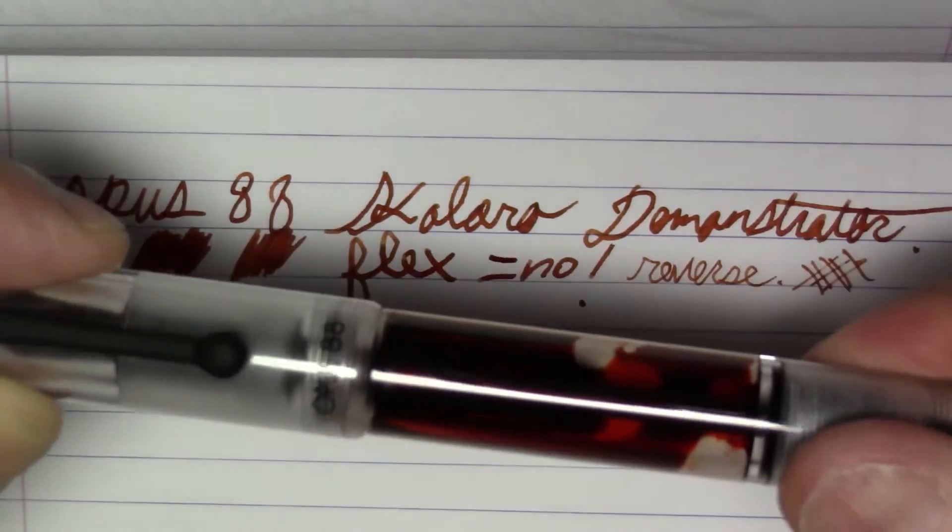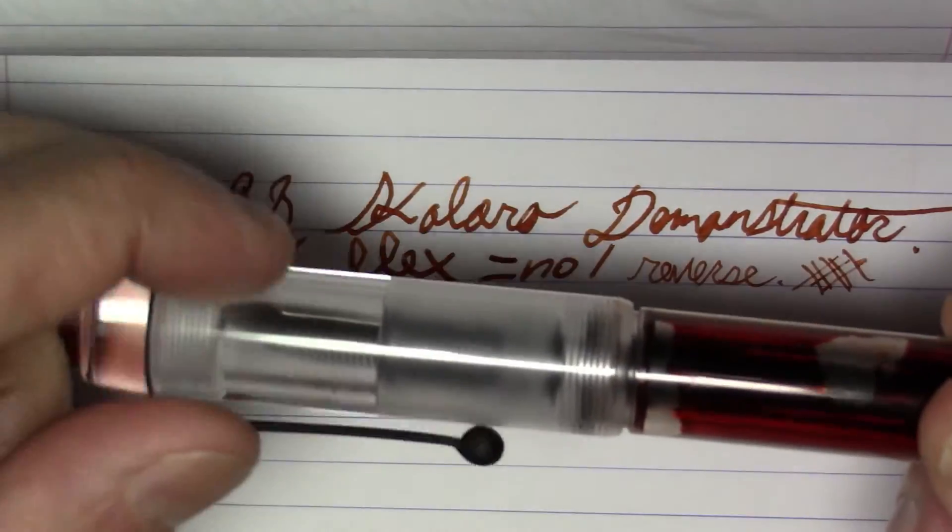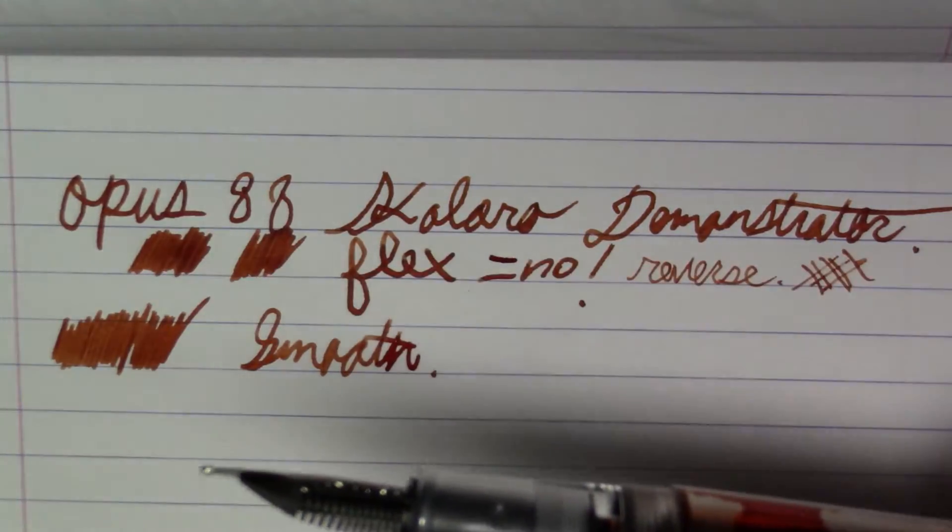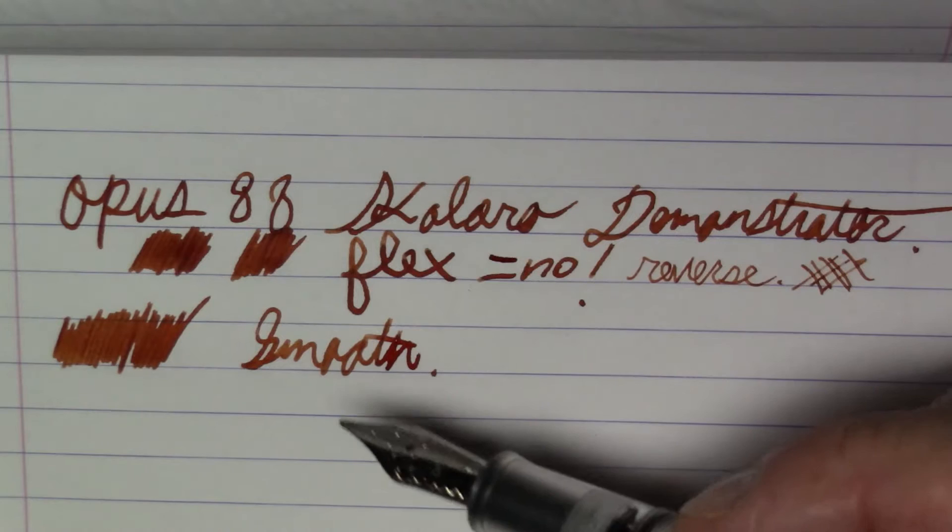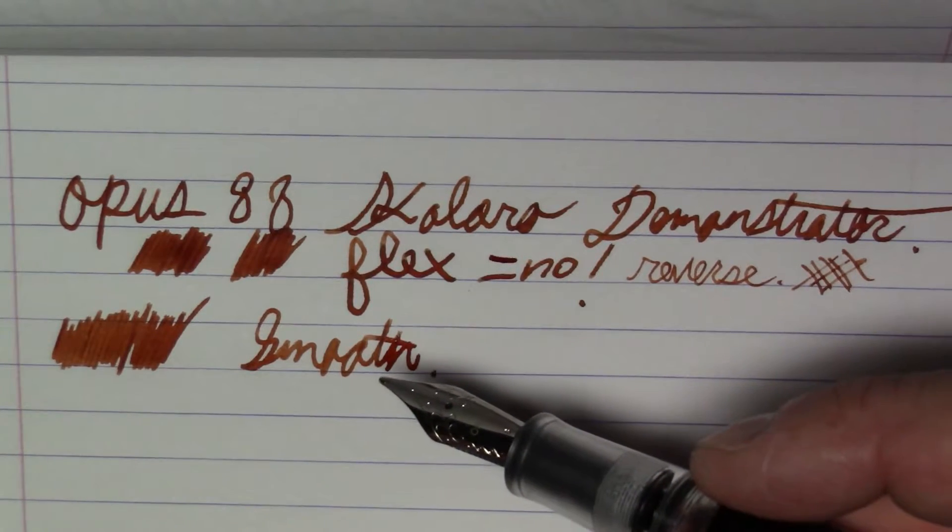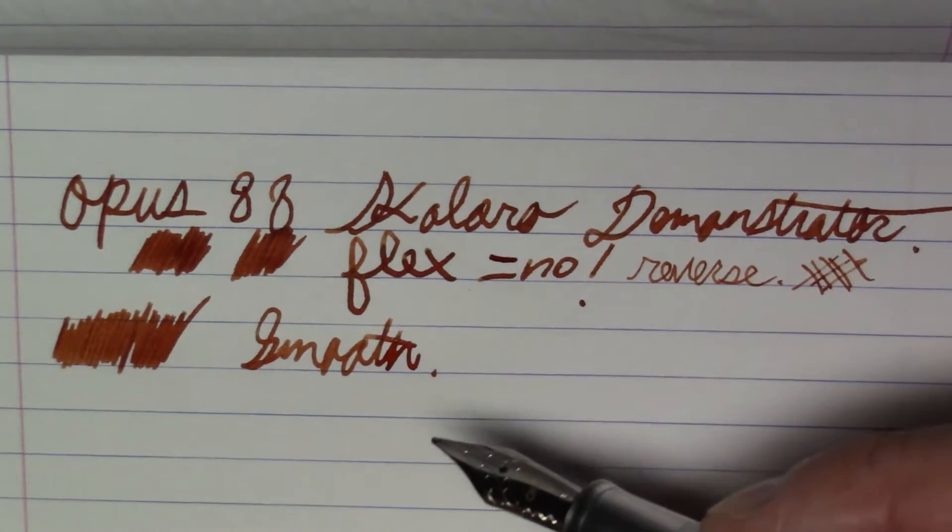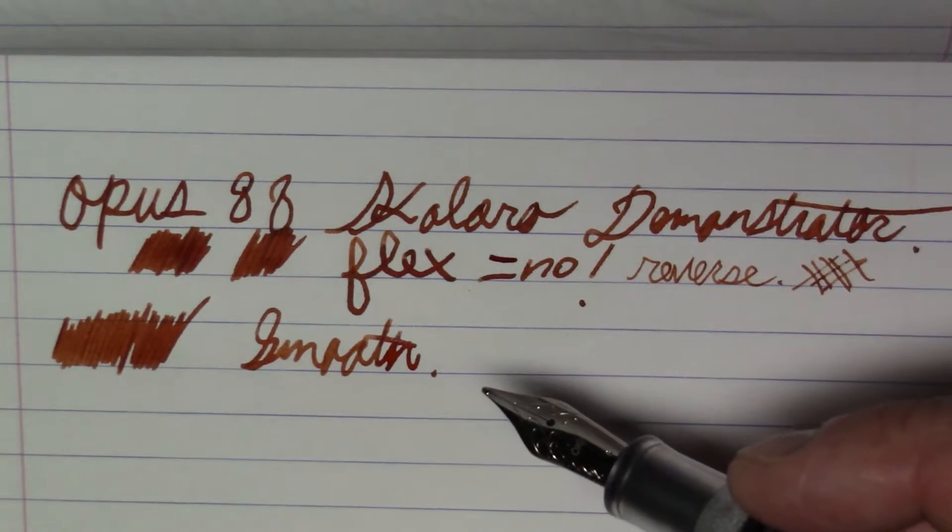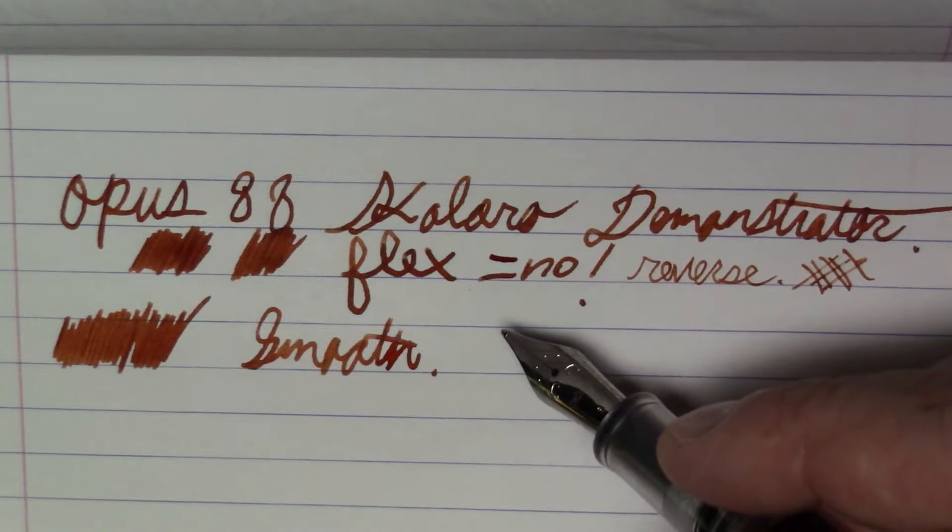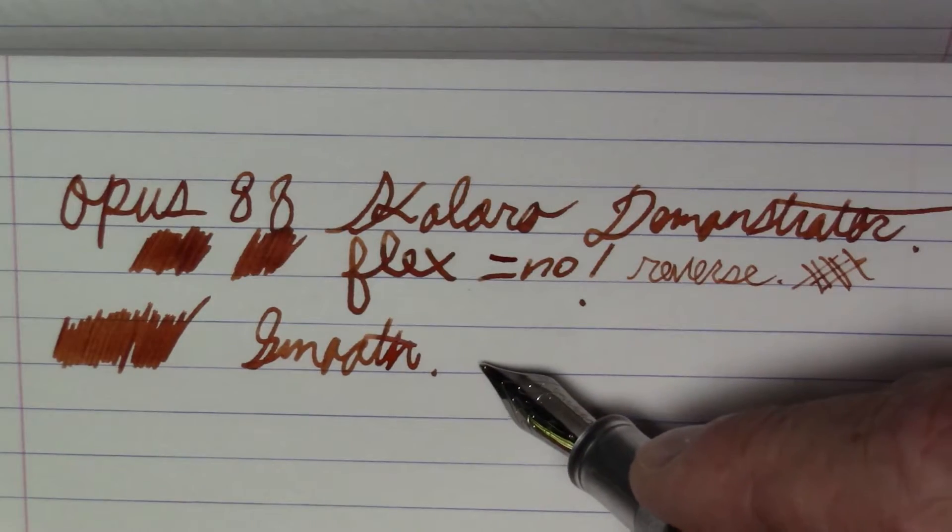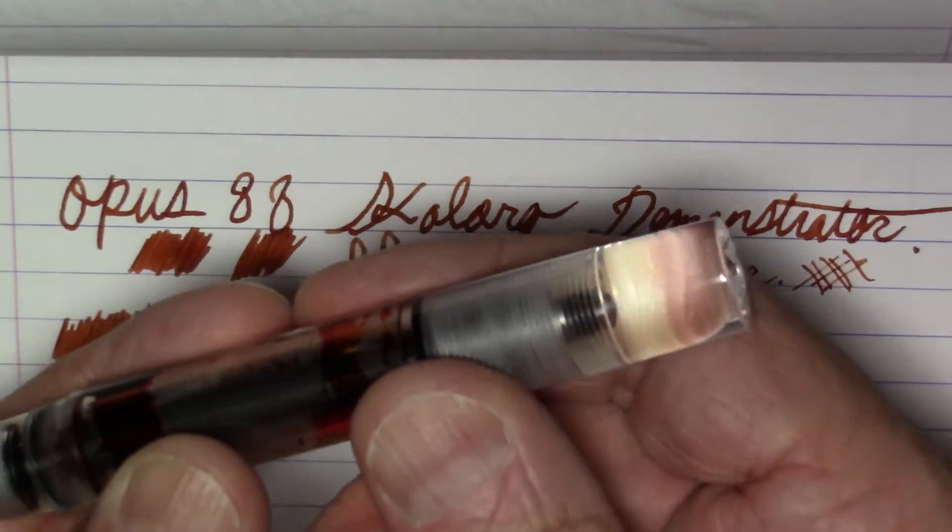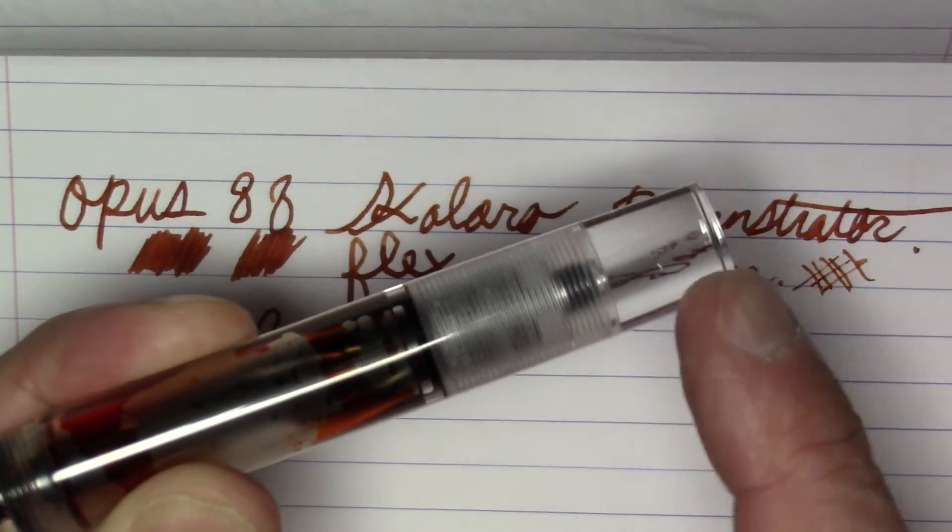Speaking of threads, one thing that you might not like about this pen is it takes one, two, three, four full turns to open it. So if you need to be able to open up your pen and write in a hurry, not a good choice, because four turns is about the maximum that you would even be acceptable. Anything more than that is just ridiculous. So four is quite a few turns to open the pen up.